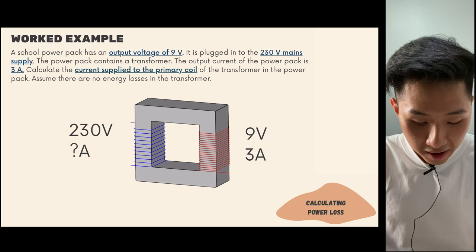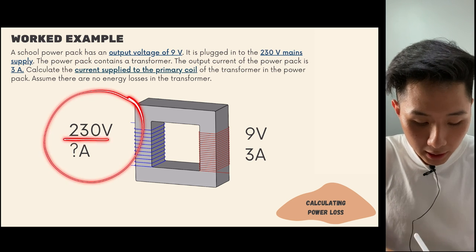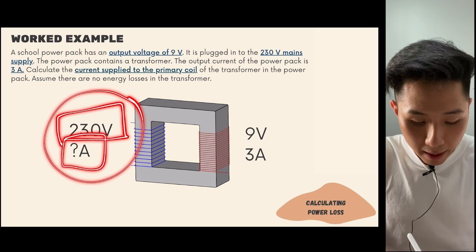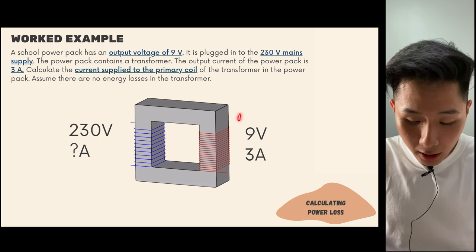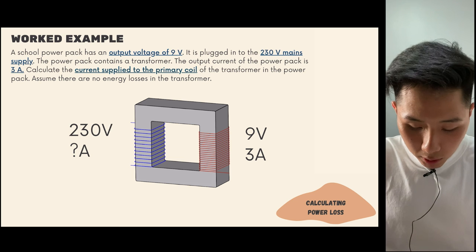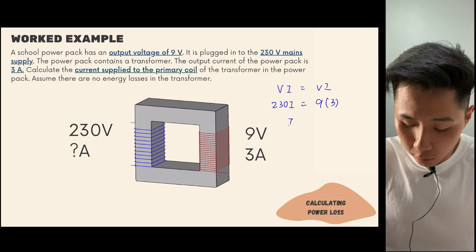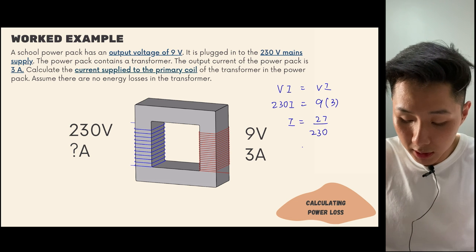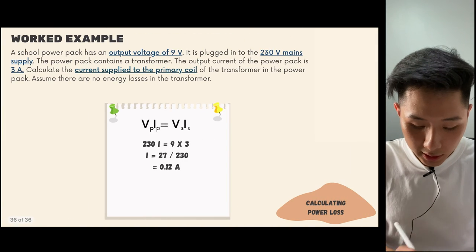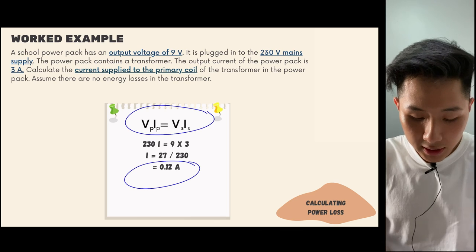Using Vi = Vi: the input is a mains supply of 230 volts with unknown current, and the output is 9 volts at 3 amperes. Setting up the equation: 230 × I = 9 × 3 = 27. Solving: I = 27 / 230 ≈ 0.12 amperes. That's how we use the formula to solve this question.